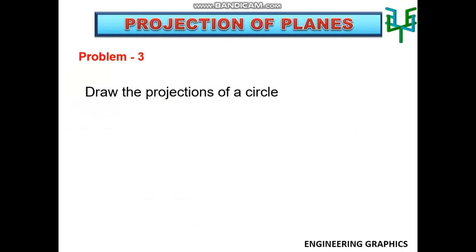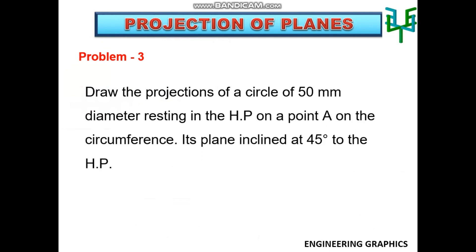Draw the projections of a circle of 50mm diameter resting in the HP on a point A of the circumference, its plane inclined at 45 degrees to HP, and the top view of the diameter AB making 30 degree angle with VP.